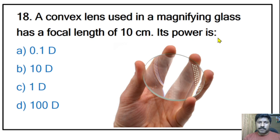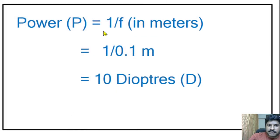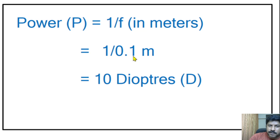Eighteenth question: a magnifying glass has a focal length of 10 centimeters — calculate the power of the glass. Options: 0.1 diopter, 10 diopter, 1 diopter, 100 diopter. The correct answer is 10 diopters. Lens power is calculated as 1 divided by focal length in meters. Converting 10 cm to meters gives 0.1 m, so 1 ÷ 0.1 = 10 diopters.